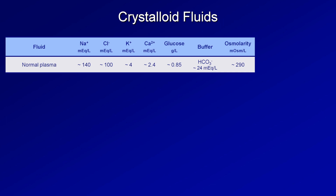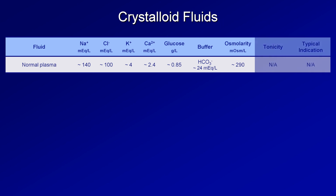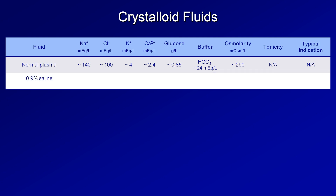The most elementary of IV fluids is 0.9% saline, frequently referred to as normal saline or NS. The 0.9% refers to the fact that it's composed of 9 g of sodium chloride dissolved in 1 liter of water. With a little bit of high school chemistry, you could work out that 0.9% saline contains 154 mEq per liter of sodium and 154 mEq per liter of chloride. There is no potassium, no calcium, no glucose, and no buffer.